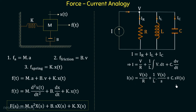This is the equilibrium equation for the electrical network, but at this point we cannot directly compare it with the mechanical system equation. The two equations are not comparable because the mechanical equation has decreasing powers of s (s², s¹, s⁰), whereas the electrical equation does not. So we need to rearrange the electrical equation to make it comparable.